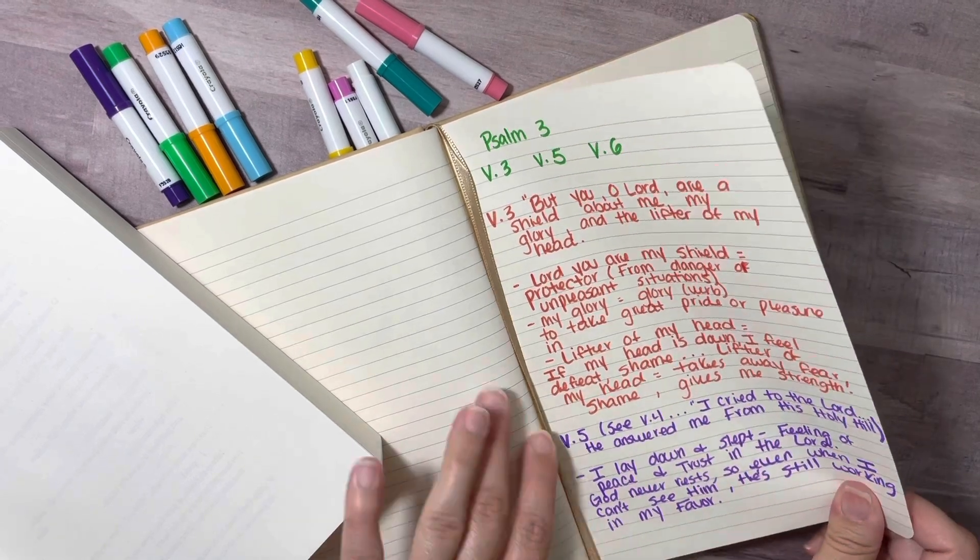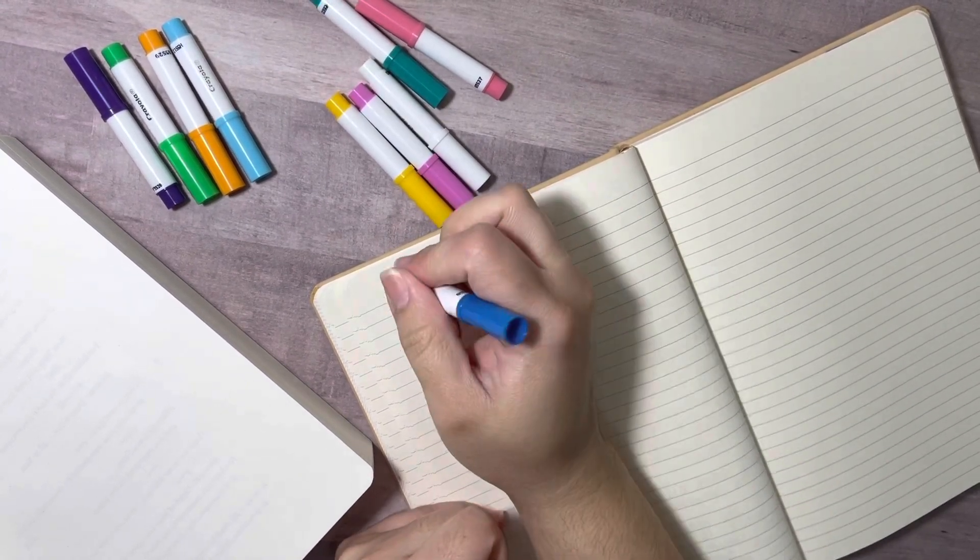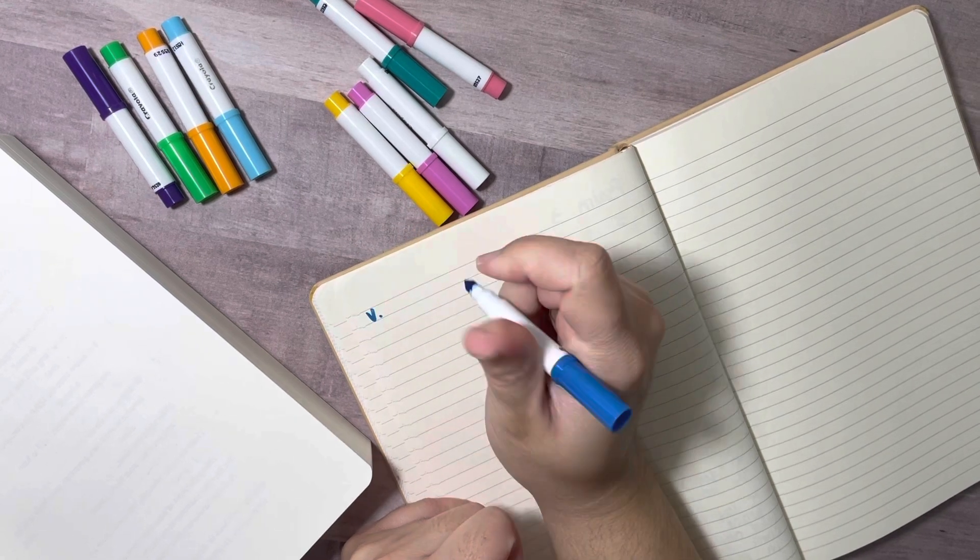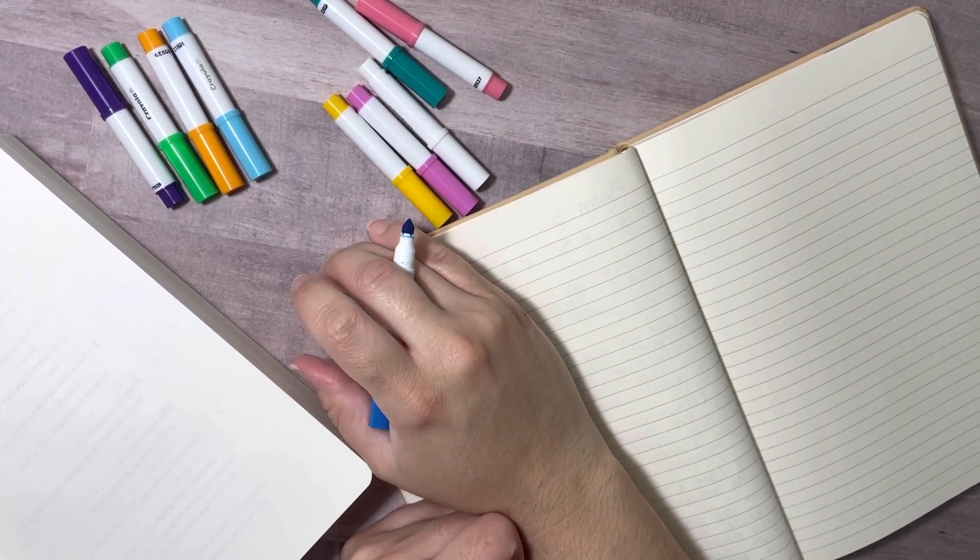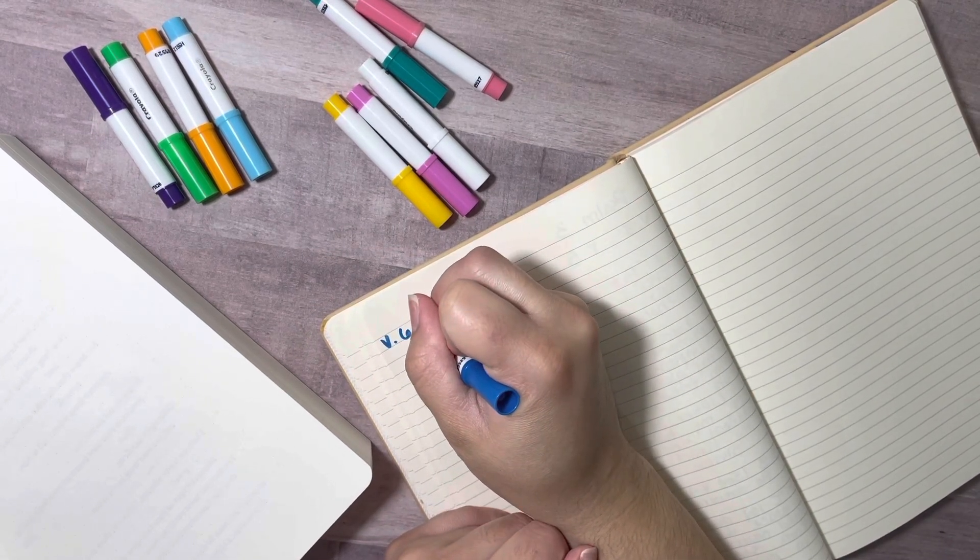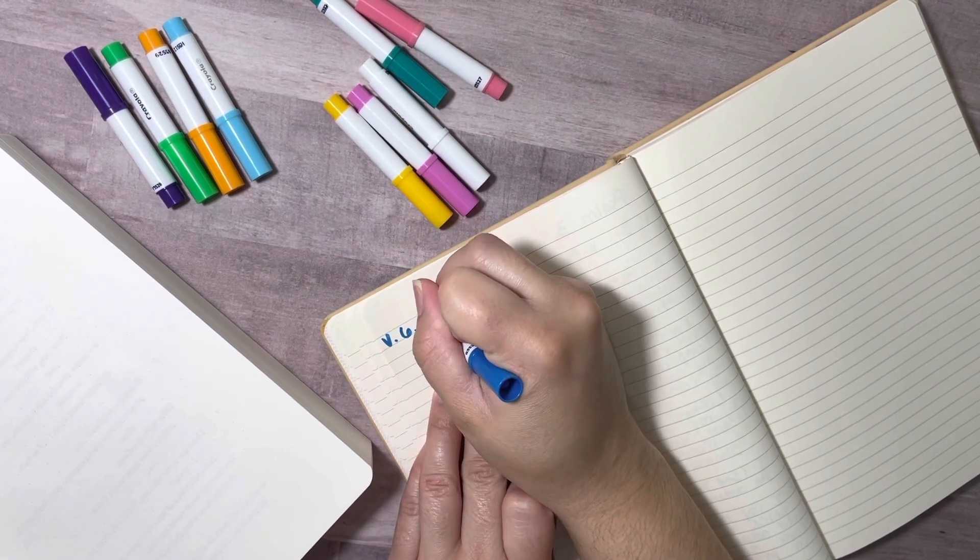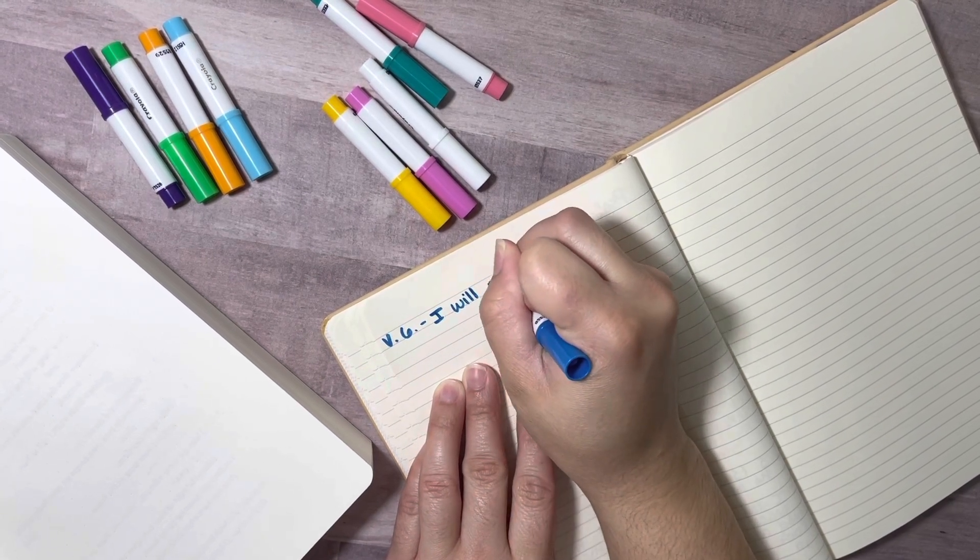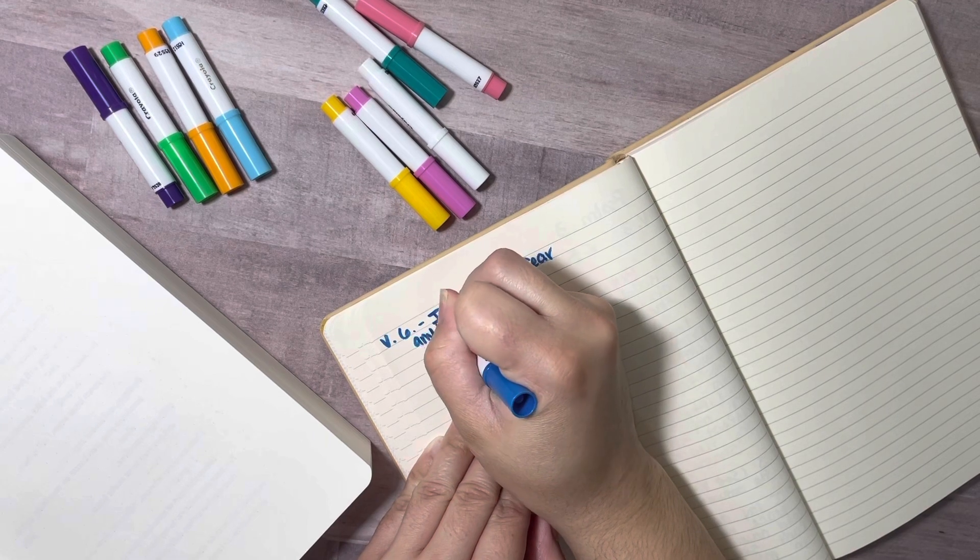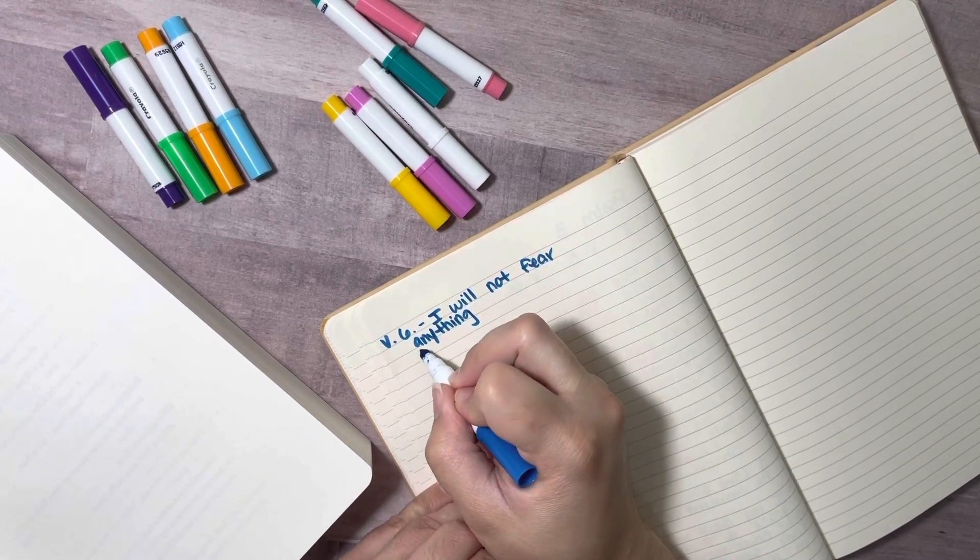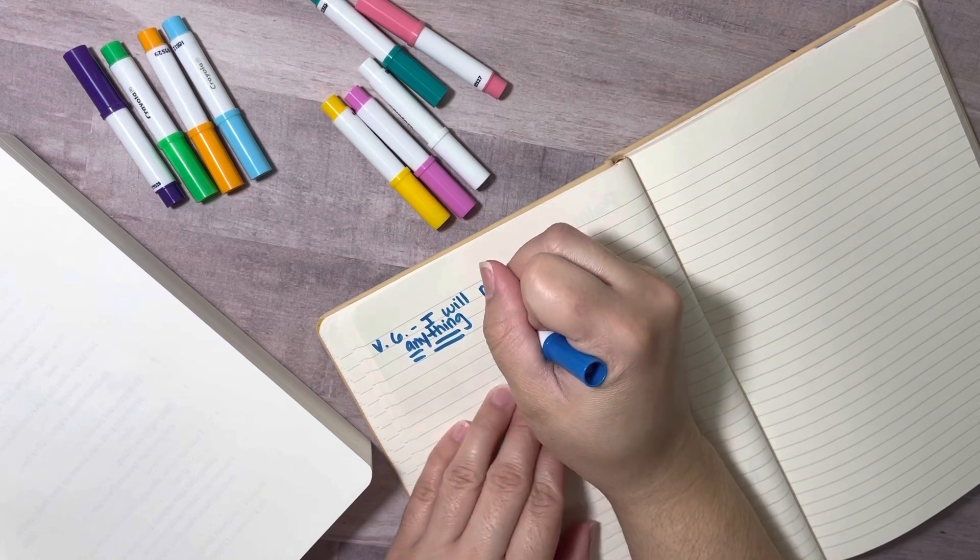All right, now let's flip around to the next page for verse six. And this one is pretty self-explanatory. There's not really a lot to it. But I do want to read it for you guys. It says, I will not be afraid of many thousands of people who have set themselves against me all around. So with this one, I'm still going to take note of it, even though it's pretty self-explanatory because it's a verse that stood out to me. So what I can say is that I will not fear anything, anything that rises against me because I have put my trust in the Lord because I can feel that peace that he has given me. Right? So, that's what I have here for verse six.